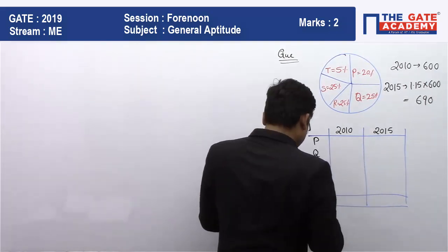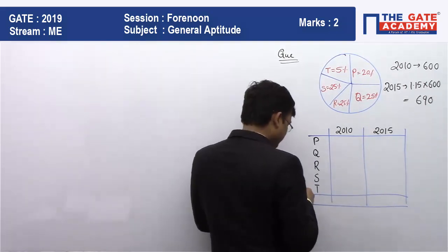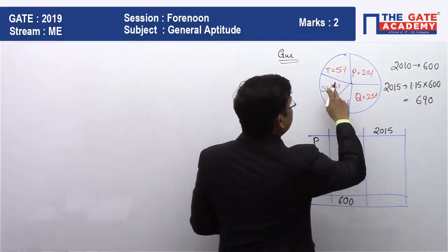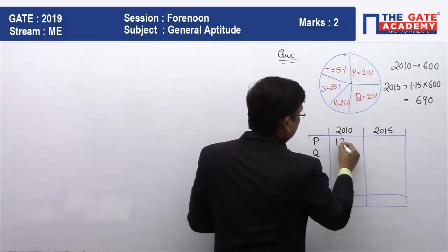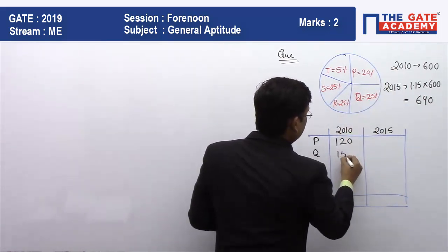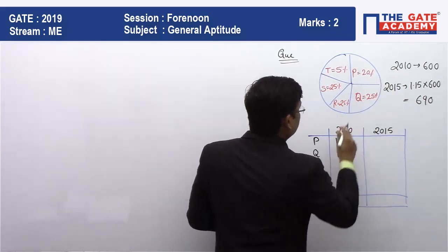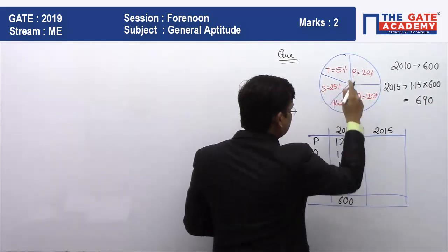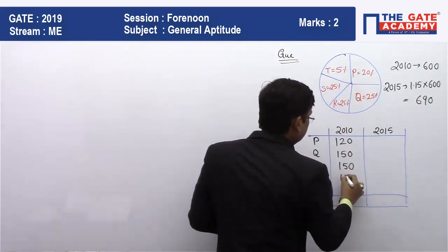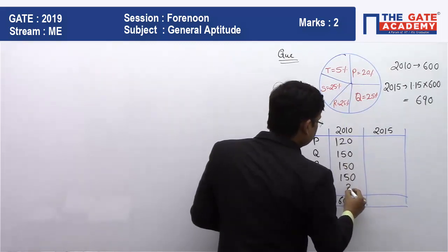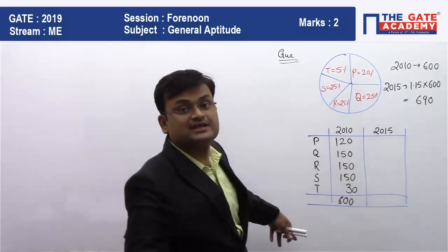To solve this, we make a table for 2010 with a total of 600. P is 20%, which is 120. Q is 25%, which is 150. R is 25%, which is 150. S is 25%, which is 150. T is 5%, which is 30. The total adds up to 600.